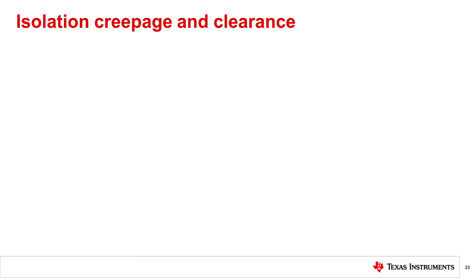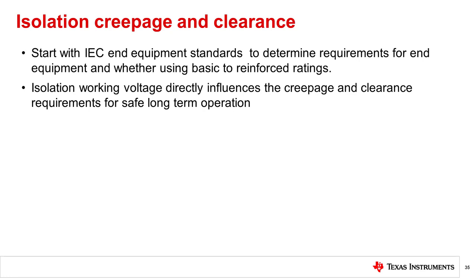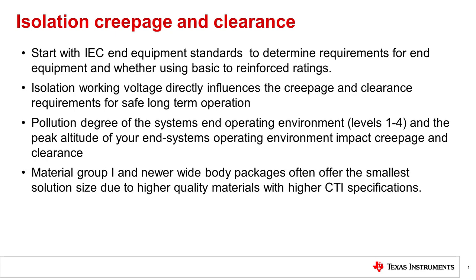This concludes our introduction to isolation, creepage, and clearance. We outlined a general set of guidelines to follow when determining creepage and clearance requirements. These include understanding the required insulation rating of basic or reinforced for your end equipment — IEC equipment standards are the most common starting point, and creepage requirements may double from basic to reinforced. Identify the insulation working voltage of your system, as this will directly influence the creepage and clearance requirements to maintain safe, long-term operation with minimal risk of electrical failure or arcing. Identify the pollution degree of the system's end operating environment (levels 1 through 4) and the peak altitude. Finally, consider the material group category of the isolator being used — newer wide-body packages often offer the smallest solution size due to higher-quality materials and higher CTI specifications.